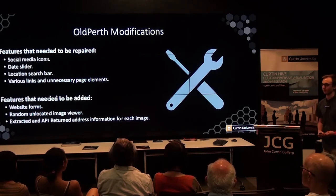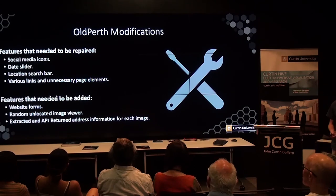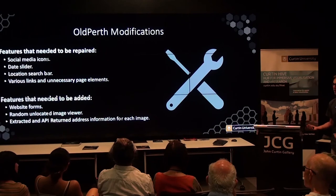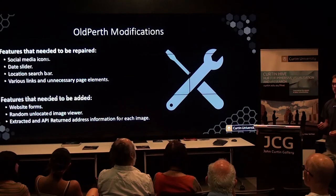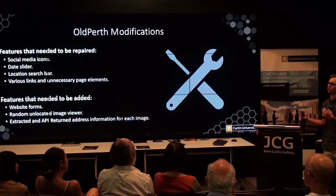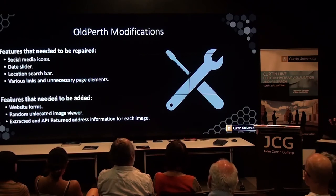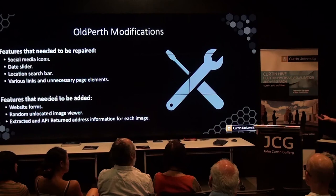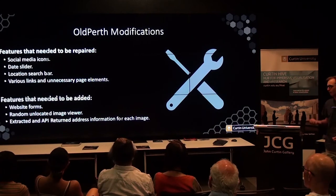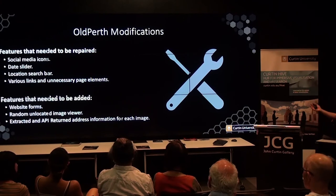Various links and unnecessary page elements also failed to work, so we cleaned those up. What we wanted to add was image correction feedback forms — key to Old Perth — where users who saw an incorrectly located image could enter the correct location, which would be sent back to us to improve Old Perth. We also wanted a random unlocated image viewer to display images LibClean wasn't able to locate, allowing users to geolocate them if they knew where the image was.